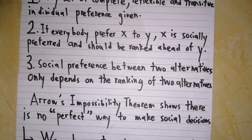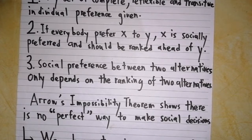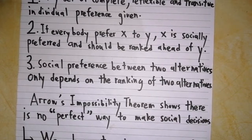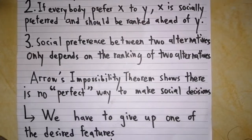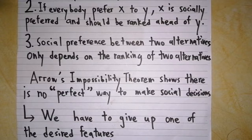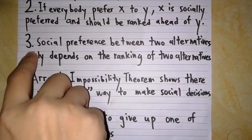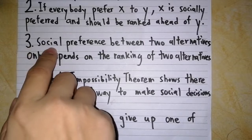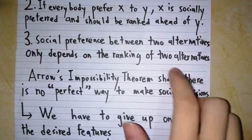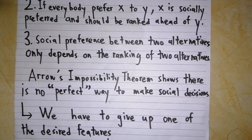And there is Arrow's impossibility theorem shows there is no perfect way to make social decisions. As a result, we have to give up one of the desired features and it will probably be the last one. So we have to give up the feature that social preference between two alternatives only depends on the ranking of two alternatives.